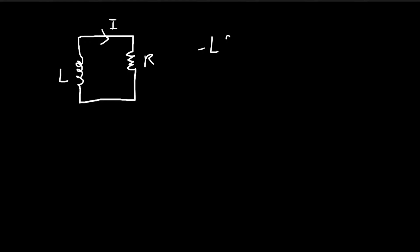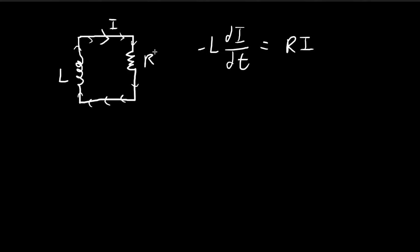The inductor is going to contribute an EMF voltage. If this current decreases, di/dt is going to be negative, and it's going to contribute a positive EMF that's going to keep trying to maintain the current in this direction, which is in accordance with our understanding of how an inductor works. This EMF is kind of like a battery trying to maintain the current, and it's going to be equal to the voltage drop across the resistor, IR. As you can see, this is actually a rather simple differential equation.